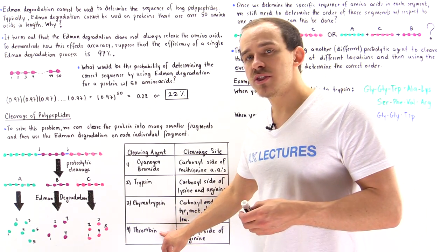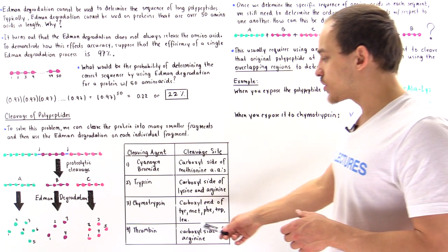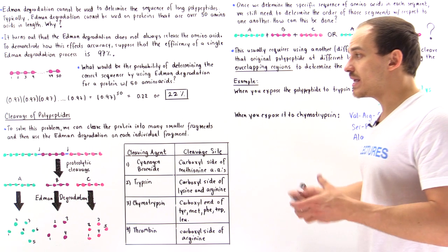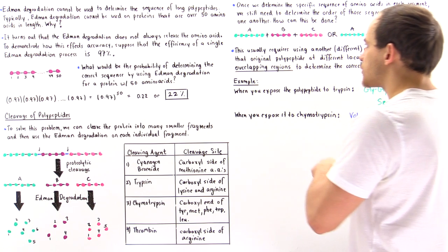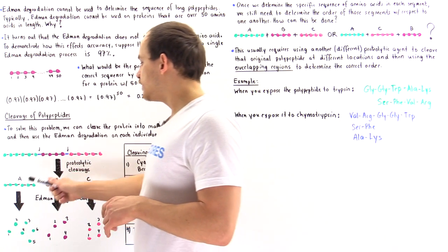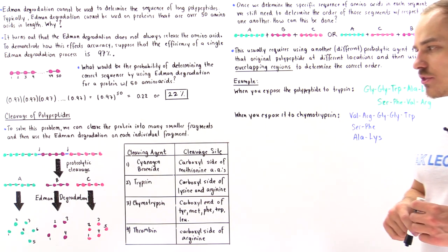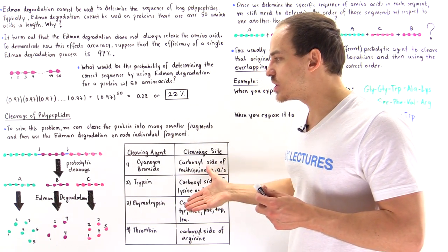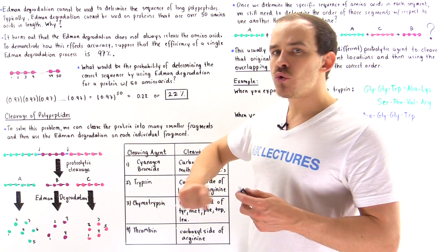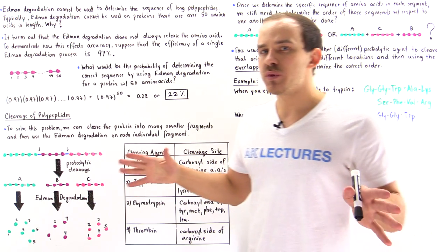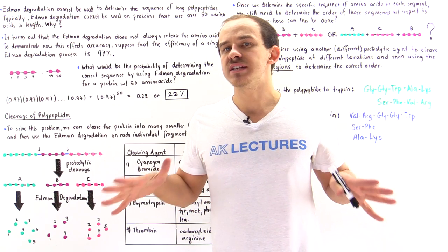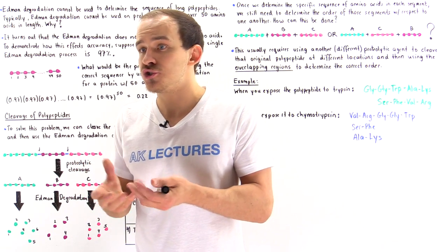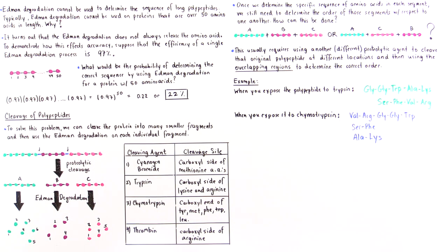Another example is thrombin, found in our blood clotting cascade. Thrombin cleaves at the carboxyl side of arginine. There are many more such biological enzymes in our body and in other organisms. To determine the order of segments, we take the polypeptide and expose it to one cleaving agent, then take the same polypeptide and expose it to a different cleaving agent. With two sets of fragments, we use the overlapping regions to piece the information together — just like a puzzle.